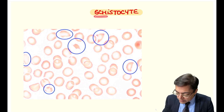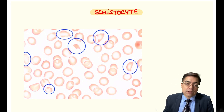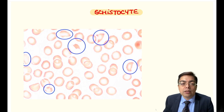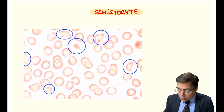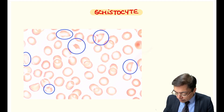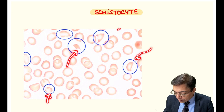When talking about a schistocyte, it's an example of a fragmented cell. What happens is that when there is formation of microthrombi in the blood vessels, the RBCs passing through these microthrombi are going to get physically damaged. As a result, we are going to have cells with a very peculiar appearance, which is associated with the term schistocyte formation.